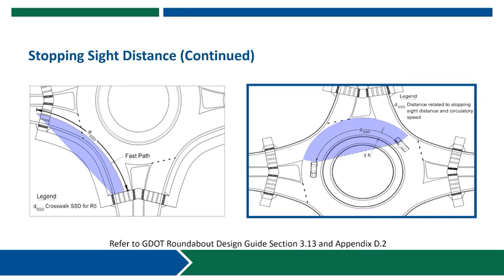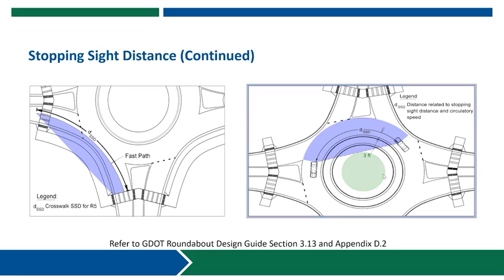Around the circulatory roadway we also need to verify that vehicles following the R4 fastest path around the central island have appropriate stopping sight distance across the central island to be able to see and react to vehicles or objects on the road in front of them. The sight triangle distance from the edge of the triangle to the edge of the truck apron would be the width around the entire central portion of the island that would need to be maintained clear with low-growth landscaping in order to preserve the sight lines. Anything outside of that area could be higher-growth landscaping to provide enhanced visibility of the central island and the intersection.